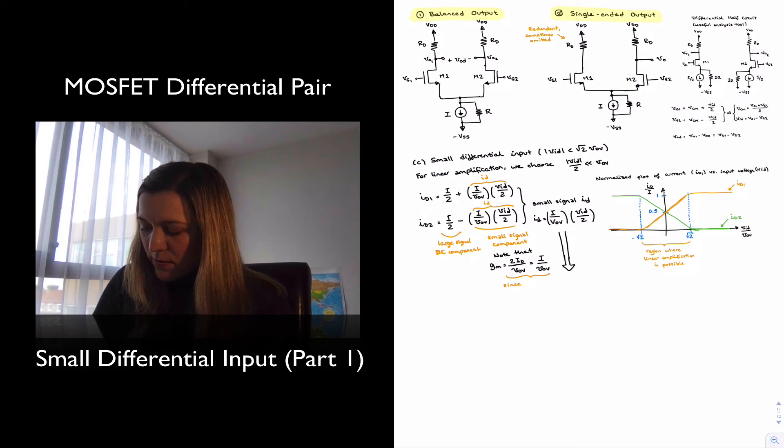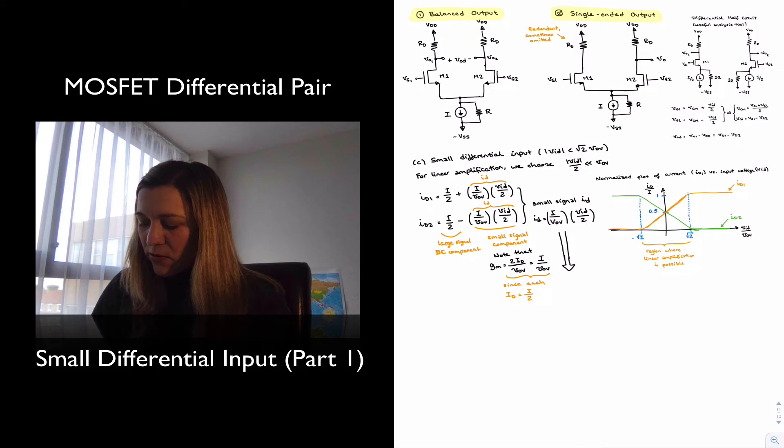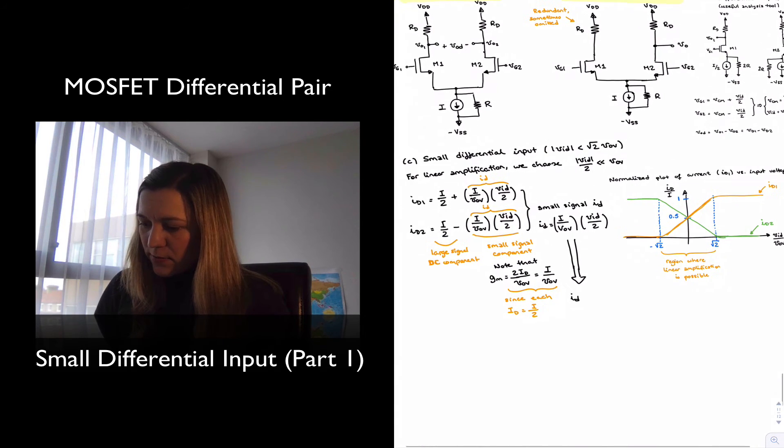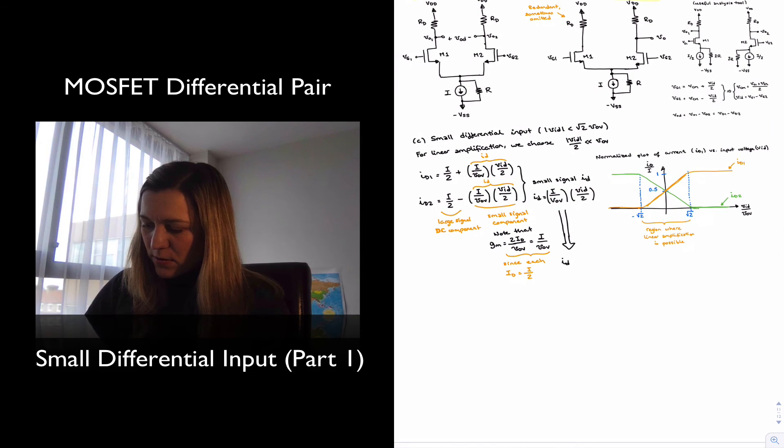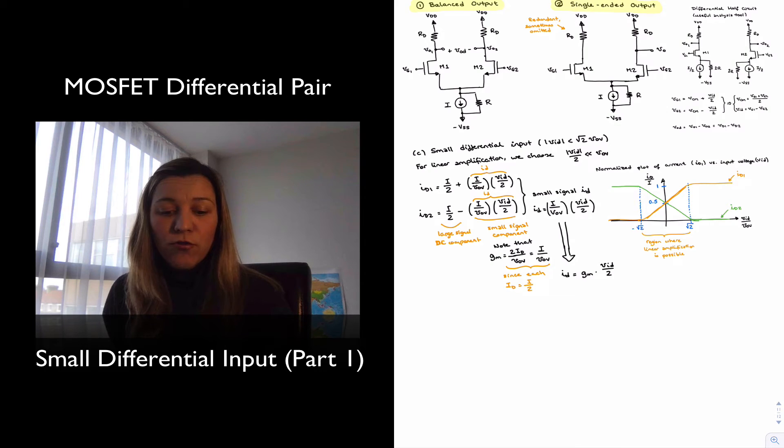Since each ID is equal to I halves. And therefore, we can rewrite the expression above for ID following this arrow, in terms of GM. GM is I over VoV, which we can see there. And so we can write ID, a small signal ID, as GM times VAD divided by two, where GM is the transconductance of either transistor. We're assuming they're both matched.